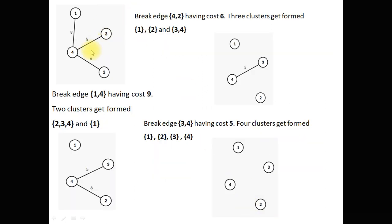This is the input to our divisive algorithm. We break the largest edge, which is edge 1-4 with cost 9. Breaking edge 1-4 forms two clusters: {1} and {2, 3, 4}. This is the input for the next step. After that the largest edge is between 4 and 2. When we break edge 2-4 we get 3 clusters: {1}, {2}, and {3, 4}.